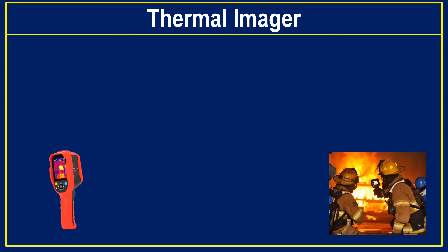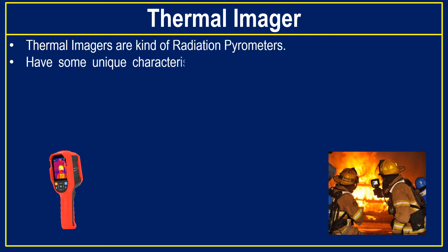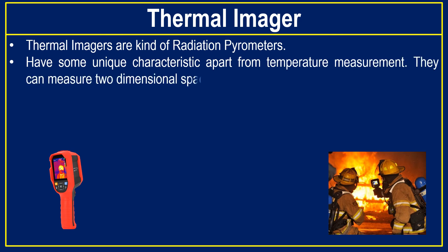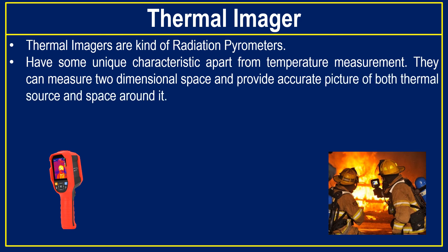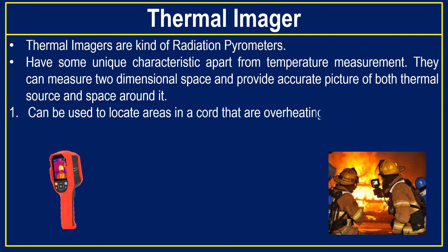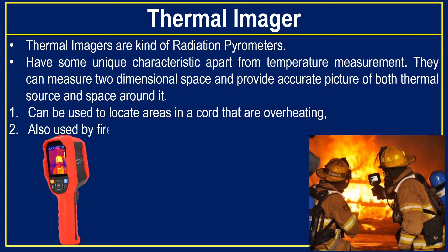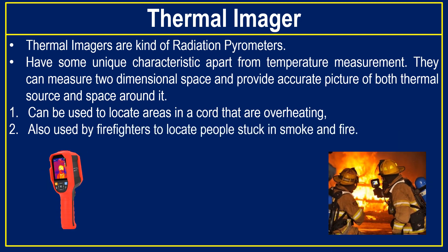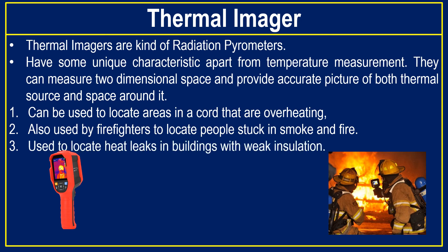Thermal imagers are a kind of radiation pyrometer, but they have some unique characteristics apart from temperature measurement. They can measure two-dimensional space and provide an accurate picture of both the thermal source and the space around it. Thermal imagers can be used to locate areas in a circuit that are overheating, by firefighters to locate people stuck in smoke and fire, and to locate heat leaks in buildings with weak insulation.